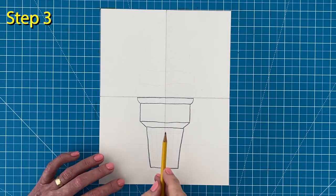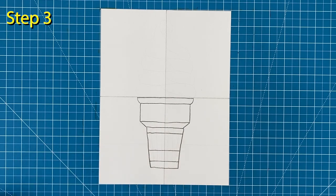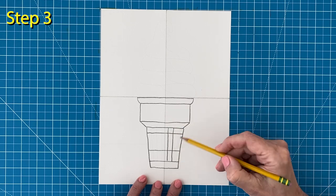Step number three. Start the texture lines on the cone with some horizontal lines. Add about three vertical lines on each side like I'm doing here.